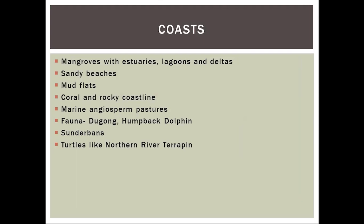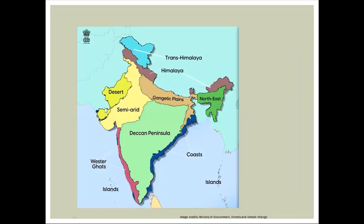One also finds the humpback dolphin in this region. On the eastern coast, particularly the northern part, the Sundarbans are present. Sundarbans are mangrove habitats found on the eastern coast, diverse in species composition. The Royal Bengal tiger is found in the Sundarbans.